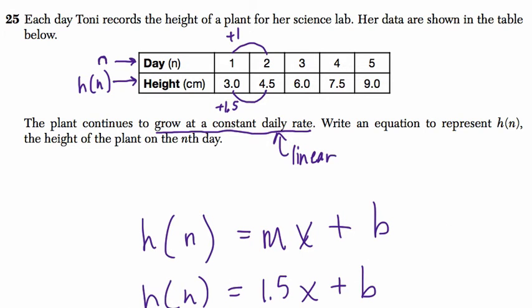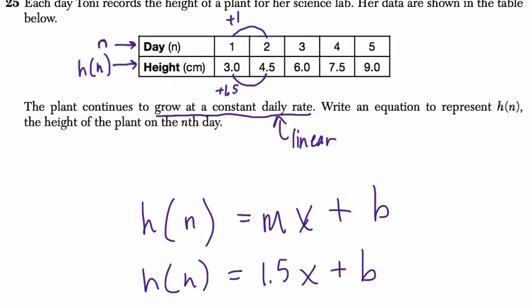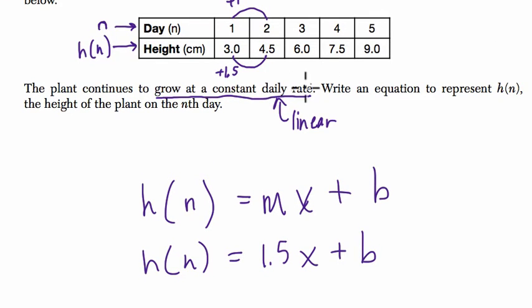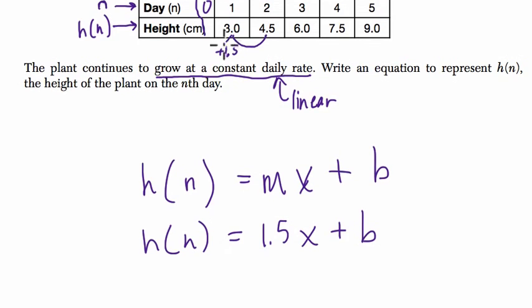So now the b value is the y-intercept. So that's when the days are at zero, at the start. So we're going to go back, using our constant slope, go back one day. So we're going to subtract a day, I'll make a little table right here, to zero. And we'll subtract one and a half from three, and that's just one and a half.